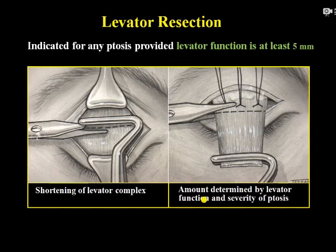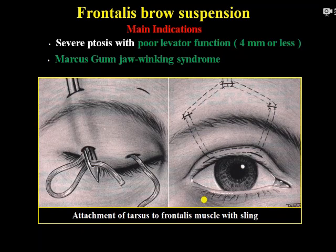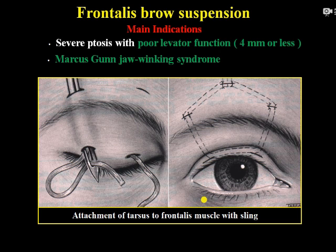Then there is levator resection, indicated for patients with levator function of at least 5 mm. The muscles are exposed, excised according to the severity, and reattached to the aponeurosis. Then comes frontalis sling suspension — giving support to the lid — usually done in cases with levator function less than 4 mm and in syndromes like Marcus-Gunn jaw-winking syndrome.